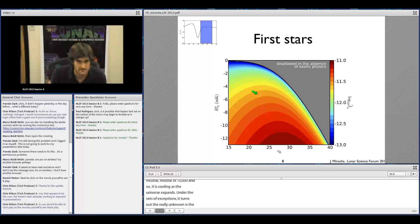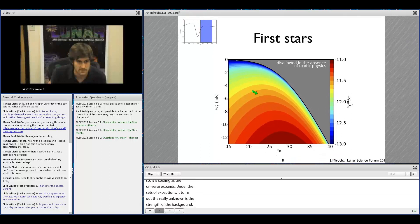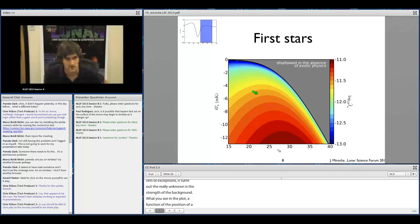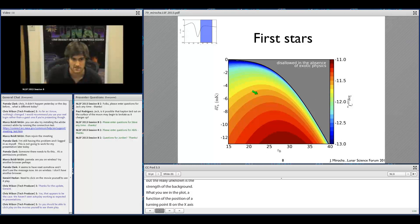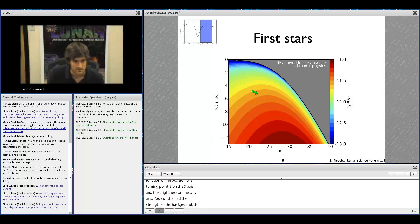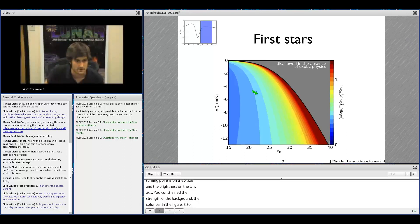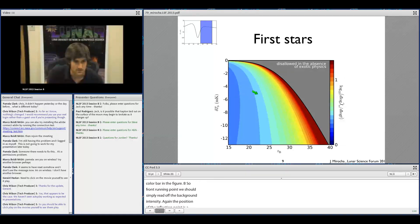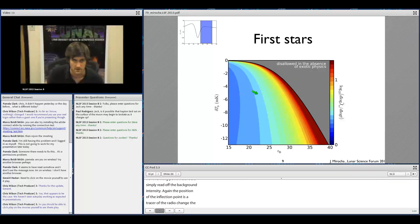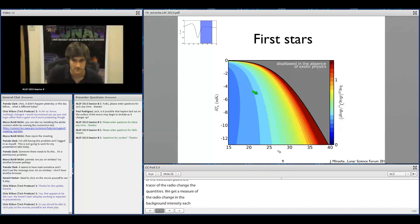This is the post-recombination epoch. The universe is effectively neutral, neutral to a part in 10,000 or so, and it's cooling adiabatically as the universe expands. Under this set of assumptions, it turns out that really the only unknown is the strength of this Lyman alpha background intensity. What you're seeing in this plot is that as a function of the position of turning point B in redshift on the x-axis and brightness temperature on the y-axis, we can actually constrain the strength of the Lyman alpha background. From turning point B under these assumptions, we should be able to simply read off the Lyman alpha background intensity. The position of the inflection points is a tracer of the rate of change in these quantities, so we also get a measure of the rate of change in the background intensity, which should tell us something about the star formation rate density at the corresponding redshift.